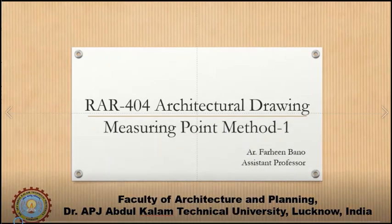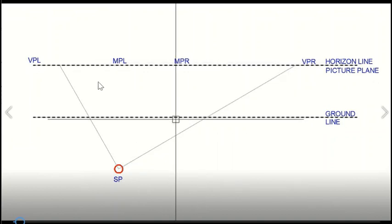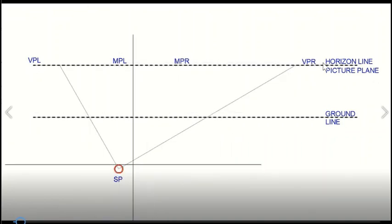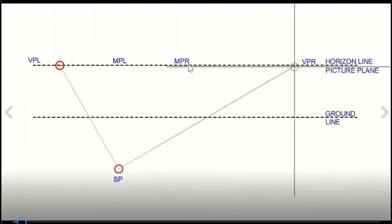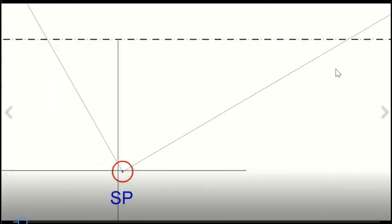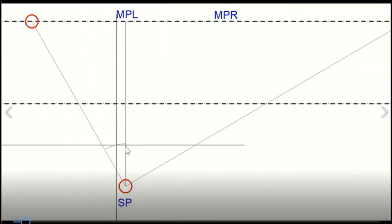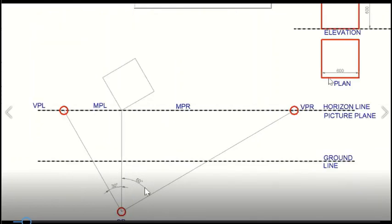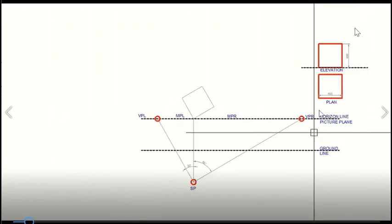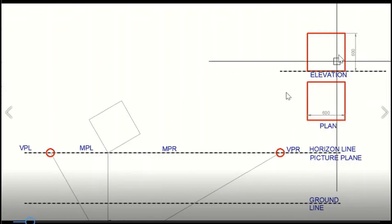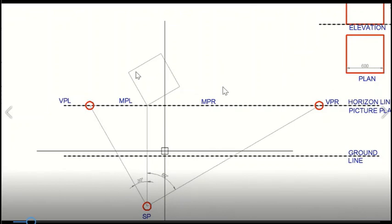Hello students, this lecture is about the shortcut method of making perspective using the measuring point method. To set up, this line is the horizon line, which is also acting as the picture line. This is the station point, and I have marked the vanishing point left and vanishing point right using 30 and 60 degree angles. This is the object — a plan of a cuboid with 600 mm dimensions, and this is the elevation of the cube, also 600 mm.